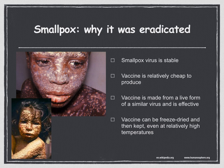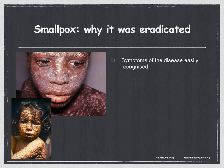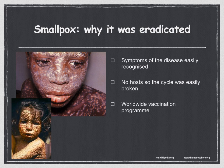The vaccine can be freeze-dried and kept even at relatively high temperatures. It is easy to administer using a stainless steel reusable needle. The symptoms of the disease are easy to recognize, so infected people are easy to identify. Furthermore, there are no carriers or animal carriers, meaning there are no hosts and the cycle was easily broken. Finally, there was a concerted worldwide vaccination program coordinated by the World Health Organization, where trained consultants educated local people and supplied information to remote areas.